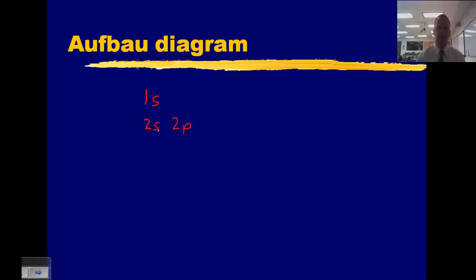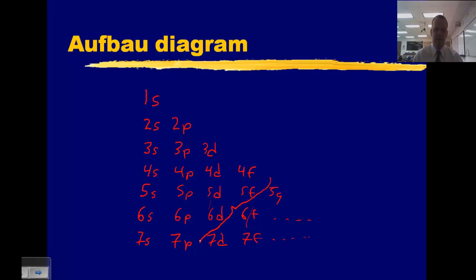So the first energy level has the s orbital. The second energy level has the s and the p orbitals. The third energy level, the s, the p, and the d. The fourth energy level, the s, the p, the d, and the f. The fifth energy level follows the same pattern. Theoretically, you could have a 5g, but none of the elements on the periodic table actually use that. You continue with 6s, 6p, 6d, 6f, and 7s, 7p, 7d, 7f. You're adding one set of orbitals. s is one orbital, p is 3, d is 5, f is 7. g would be 9, theoretically. None of the elements in the periodic table will actually go past this portion here.